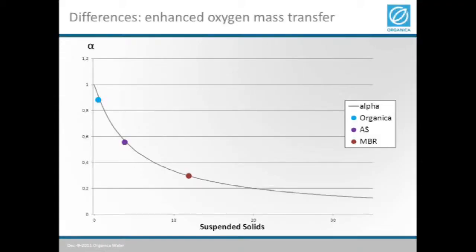The importance comes in the fact that when you blow air into the reactors, the efficiency from the bubbles of the oxygen transfer into the water depends on how clean the water is. By definition, in clean water — drinking water — that efficiency is one. This is by agreement. So the oxygen transfer coefficient is considered one when there are no suspended solids in the water. The dirtier your water becomes, the less efficient that oxygen transfer will become.